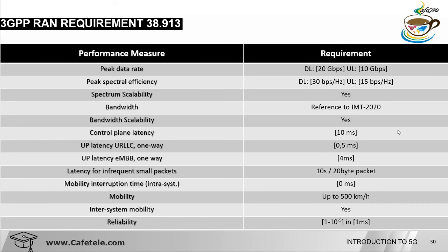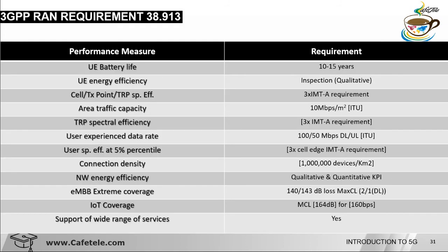Control plane latency supports 10 milliseconds. User plane latency supports 0.5 ms for URLLC one-way, and 4 ms for eMBB one-way. For infrequent small packets — 10 seconds or 20 bytes — this applies to mMTC. Mobility interrupt time is 0 ms, and mobility is supported up to 500 km/h. Inter-system mobility is also applicable. Reliability is 1 minus 10^-5 in 1 ms for Release 15, improving to 1 minus 10^-6 in Release 16. Battery life support is 10 to 15 years.